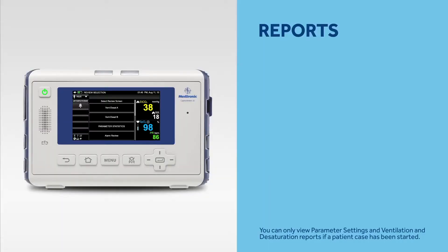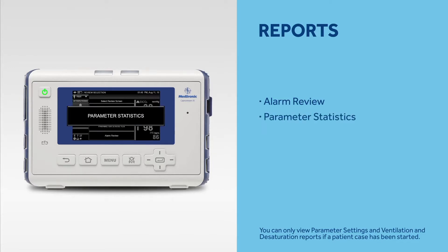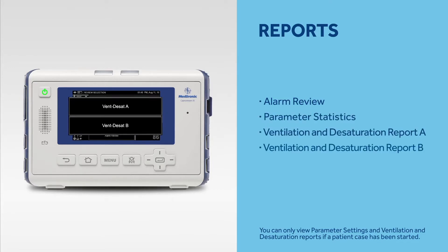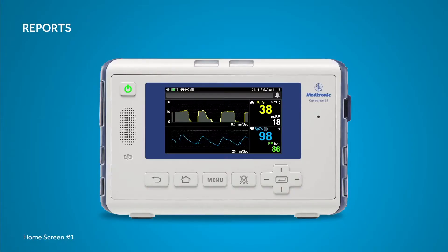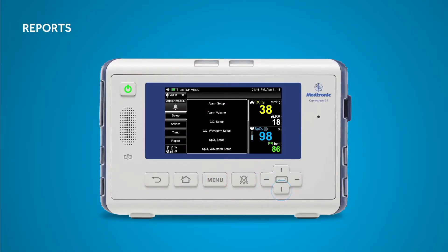The monitor allows you to view or store various reports, including alarm review reports and parameter statistics. Ventilation and desaturation reports, which show a patient's ventilation and oxygenation levels, can also be stored. You can only view parameter settings and ventilation and desaturation reports if a patient case has been started. To view a report, press the menu button and select Report, then View Report.